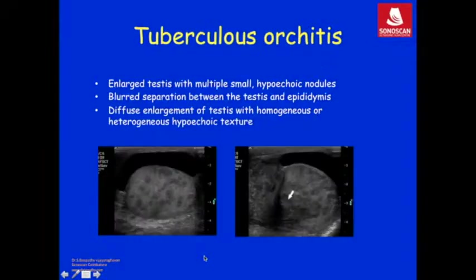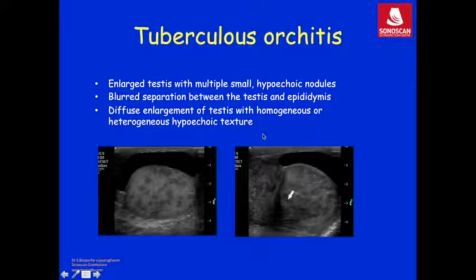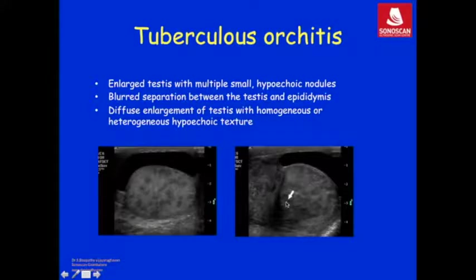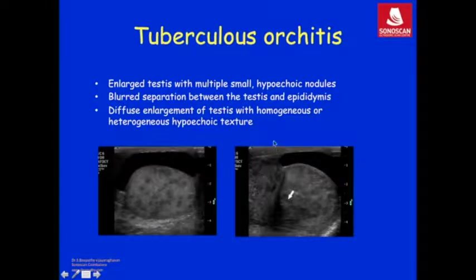In tuberculous orchitis, the testis may be enlarged with multiple small hypoechoic nodules. There may be blurred separation of the testis and epididymis with coexisting granulomas in the epididymis, or diffuse enlargement of the testis which is echo-poor.